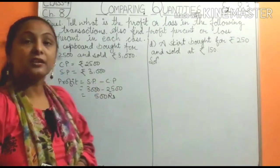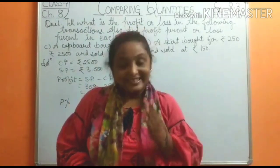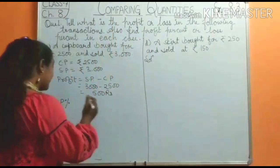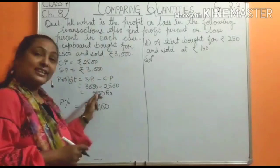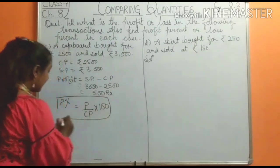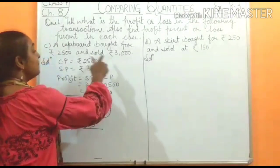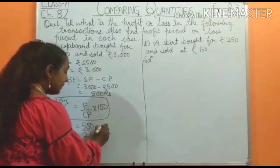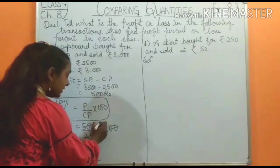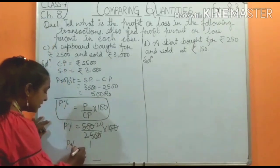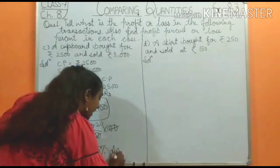To find profit percent, the formula is profit upon CP multiplied by 100. Profit percent equals 500 upon CP, which is 2,500, multiplied by 100. Simplifying: 500 divided by 2,500 multiplied by 100 gives us 20%. So profit percent equals 20%, and this is our answer of Part C.